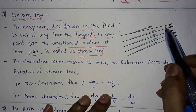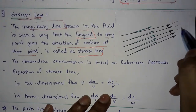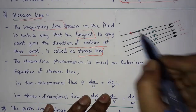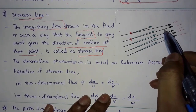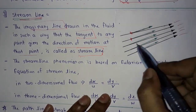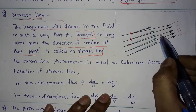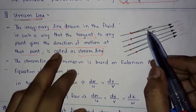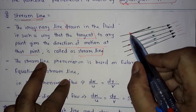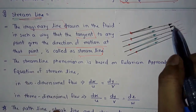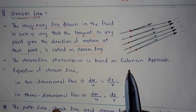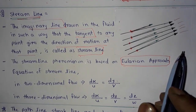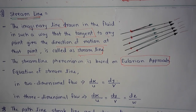These are the streamlines. The tangent at any point on a streamline gives the direction of motion of the particle at that point. The streamline phenomenon is based on the Eulerian approach, which is related to a fixed region — the study is related to a fixed region.